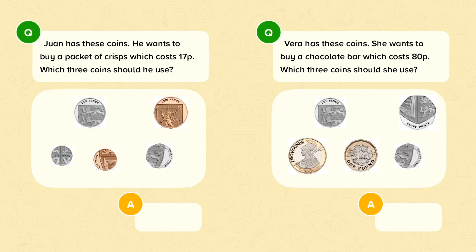Liam has these coins. He wants to buy a packet of crisps which costs 17p. Which 3 coins should he use? He has a 10p coin, a 2p coin, a 5p coin, a 1p coin and a 20p coin. We need to work out which 3 coins add up to 17p. 10p, 5p, and 2p will add up to make 17p. So these are the 3 coins that he should use.